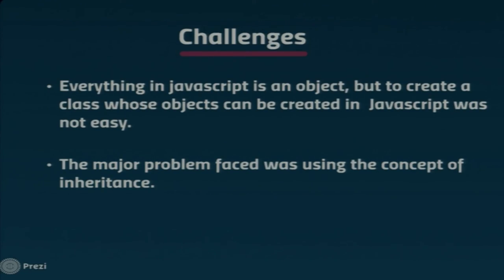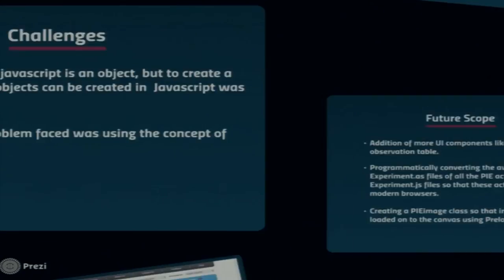Further challenges during the internship included the conversion of inheritance patterns from ActionScript to JavaScript, which was a significant challenge. The team successfully translated different graphic objects and UI component files into .js equivalents. Future scope includes implementing UI components like sliders and observation tables, programmatically converting experiment.as files to experiment.js, and creating a PIEImage class to render images on the canvas using EaselJS and preload.js.